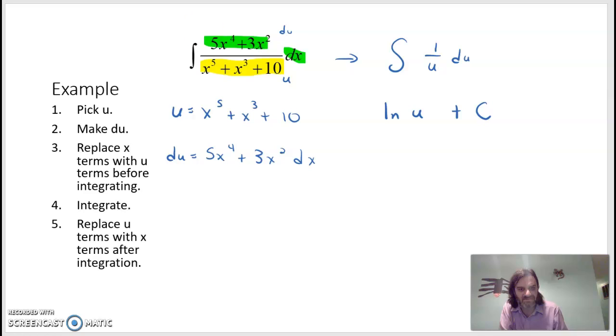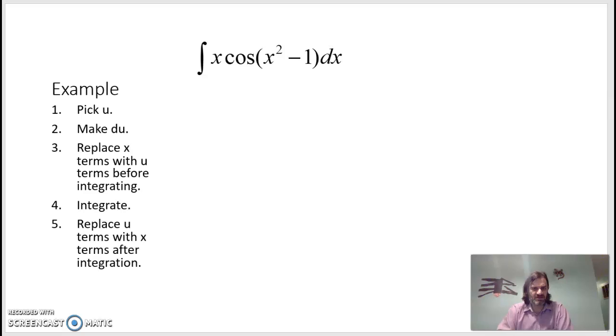We can put absolute value bars around this if we want. Good question of whether or not we should. But natural log of u plus C. So we're going to go back to what u was, which was x to the 5th plus x cubed plus 10. So natural log of that plus C. Everything looks really good there. So while it looks really complicated, it's a fairly simple natural log integration as long as you see the natural log.